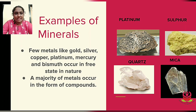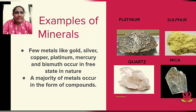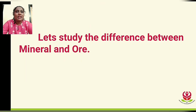Examples given here are quartz and mica. Quartz is made up of silica and oxygen. Mica is made up of silica, manganese, iron, etc. Now let's study the difference between mineral and ore.